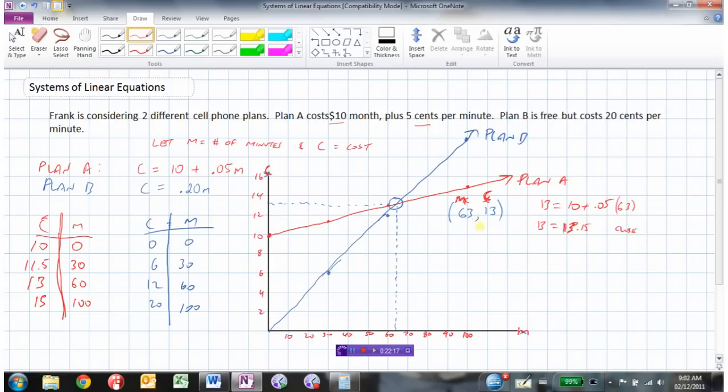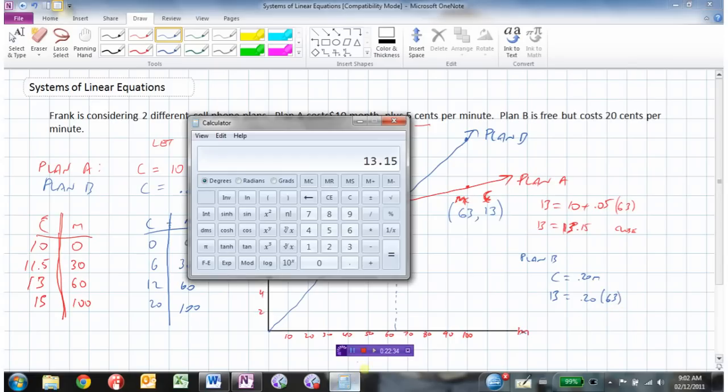Let's try Plan B. Plan B was just cost equals 0.20M. So putting 13 in for cost and putting 63 in for M. And checking those numbers on the calculator. 12.6.